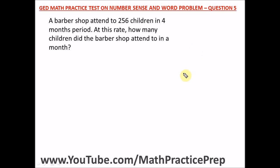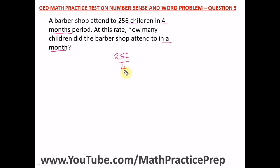The final question: A barber shop attended to 256 children in a four-month period. At this rate, how many children did the barber shop attend to in one month? We know the barber shop attended to 256 children over four months. To find the monthly figure, we divide 256 by 4.